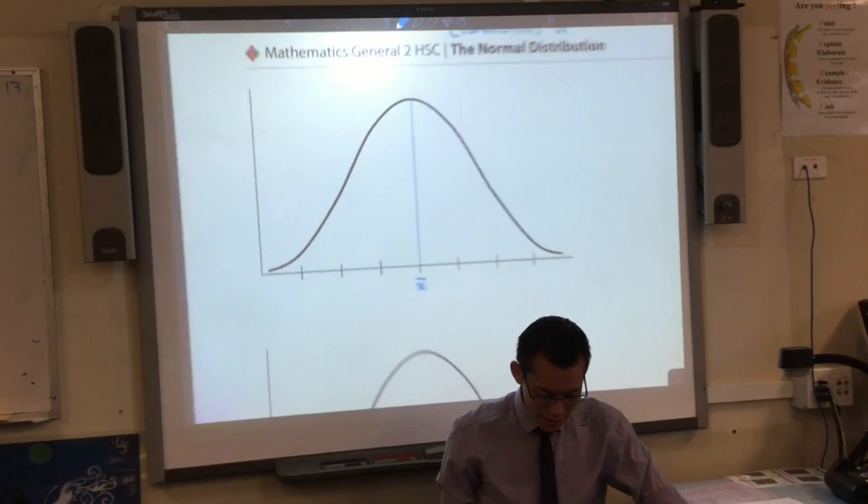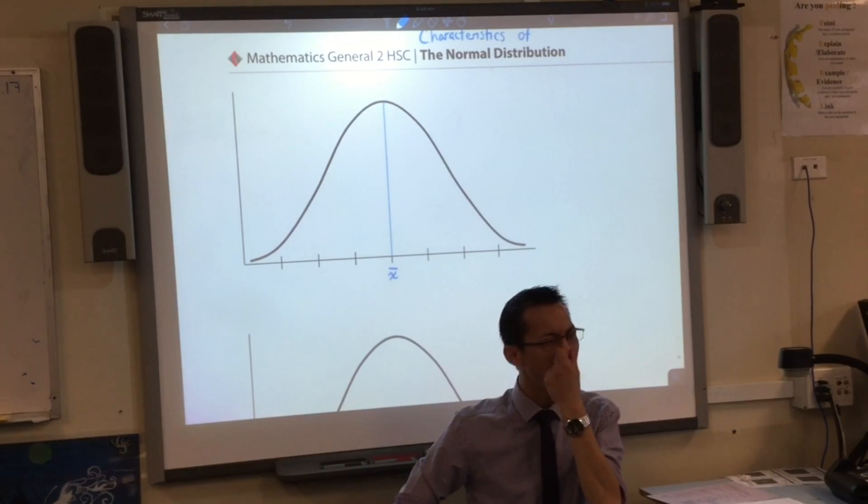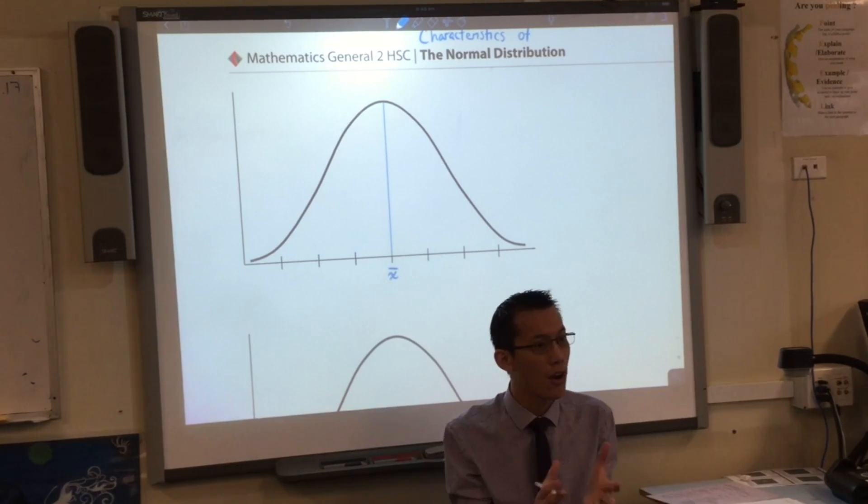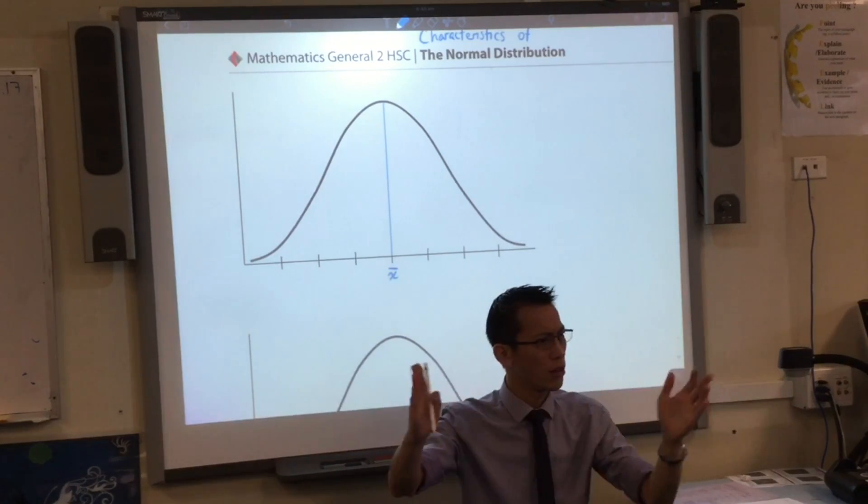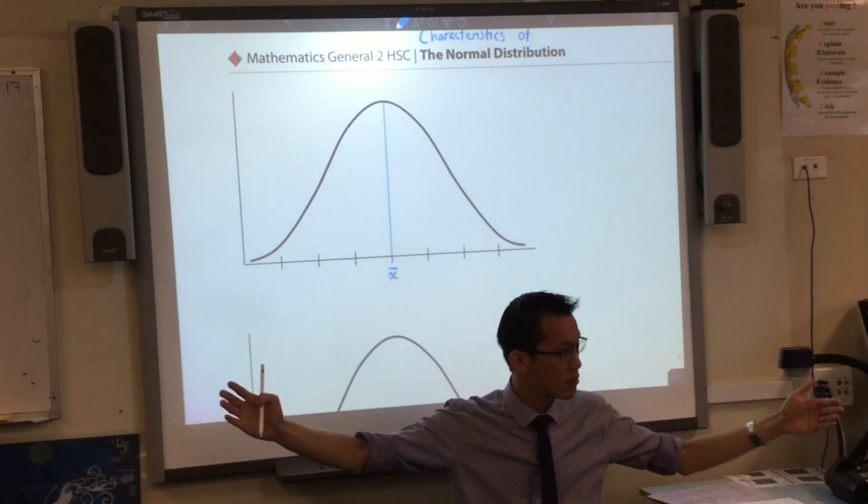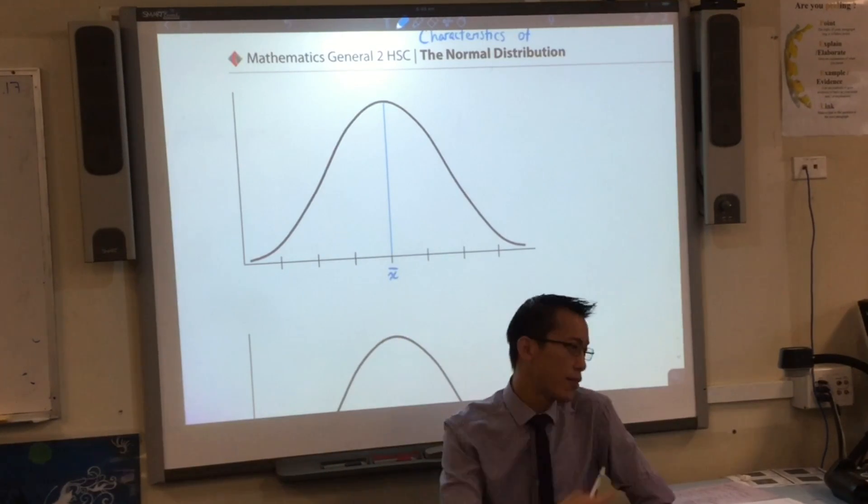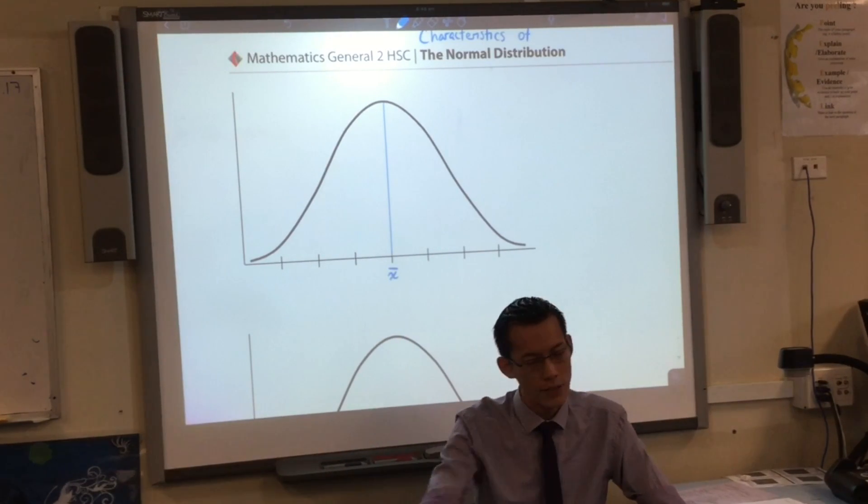Now what you can see is I put a whole bunch of other markers there, and what each one represents is a standard deviation. So we know you can take a set of data and you can punch all the numbers into your calculator, and then it spits out if you ask it to the standard deviation, which is a measure of not location but spread. So each one of these markers on the side here is one of those standard deviations.